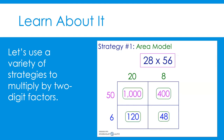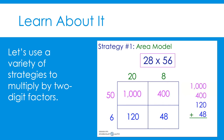Now, let's add those partial products together. The top two values represent 28 times 50, and the bottom two values represent 28 times 6. If we add all four values together, we will record a 0 in the ones place, a 6 in the tens place, a 5 in the hundreds place, and a 1 in the thousands place. The product of 28 times 56 is 1,568.